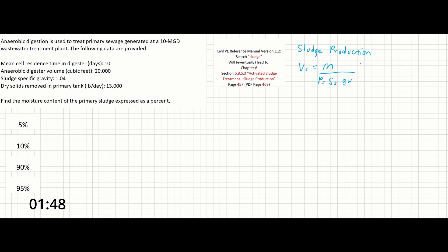Before we can use this equation, the first thing we need to do is find V_S or this daily sludge volume produced. The daily sludge volume is given in units of feet cubed per day. To get that, we want to divide the digester volume by the cell residence time.